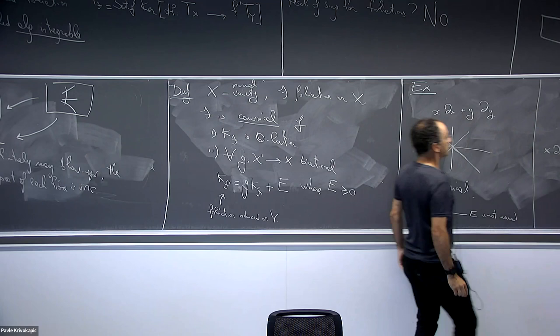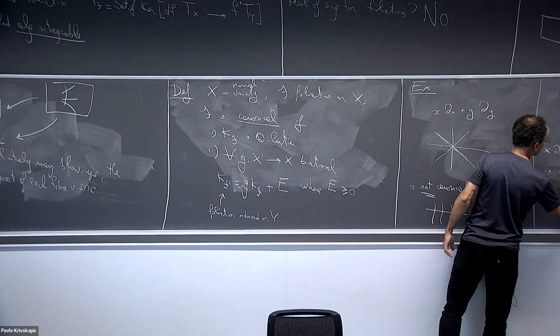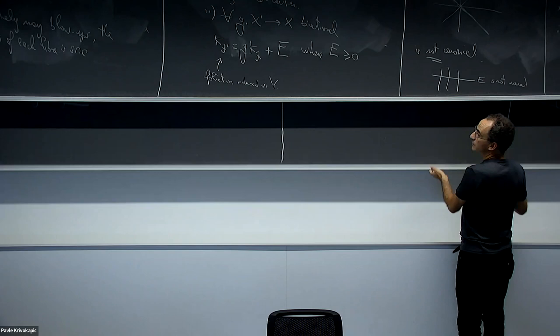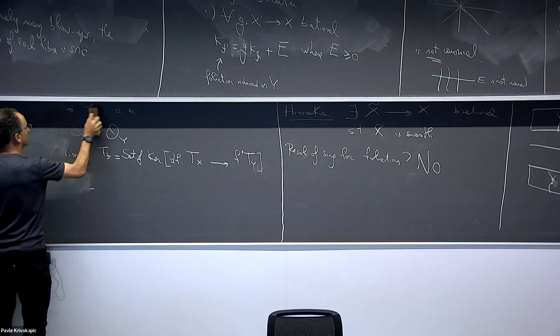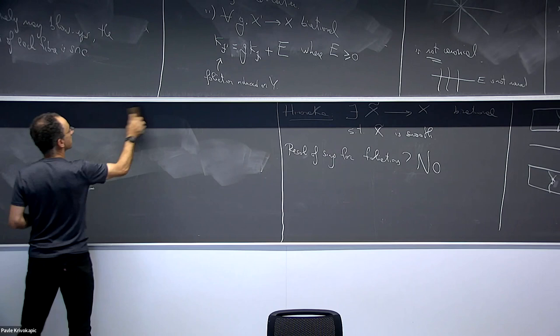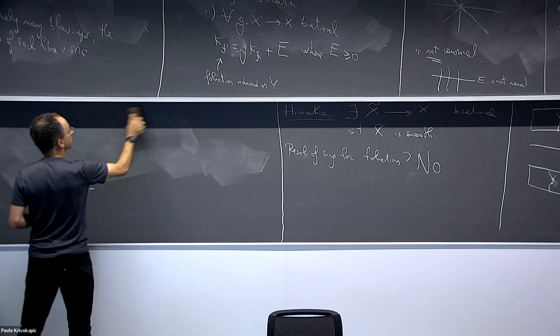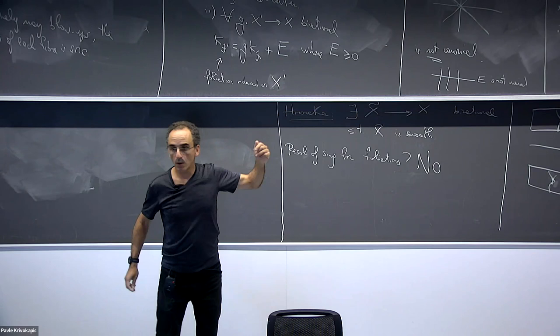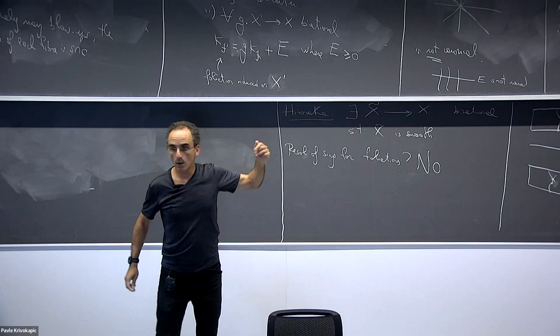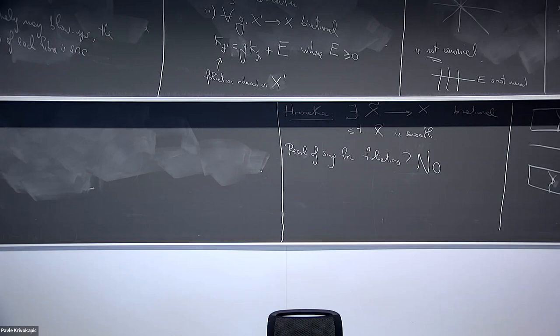A much better singularity — canonical — is something of the form mentioned yesterday, which is essentially the same foliation viewed differently. I believe it is defined by a form like x dy minus y dx or similar. We also mentioned Seidenberg's theorem, and the question is whether we can find an equivalent statement for foliations.